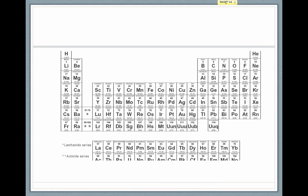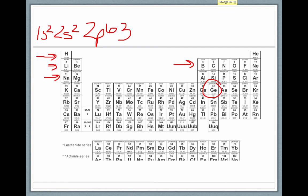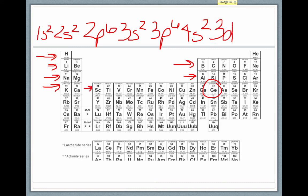Let's try a larger element: germanium, element number 32. We know the 1s, 2s, 2p, 3s, 3p, and 4s sublevels are completely full. We also know that the 3D level is completely full — remember, 3D fills after 4S. So the configuration must end in the 4P sublevel, and specifically 4p2 because germanium is the second element into that block. Adding up all the electrons should give you 32.